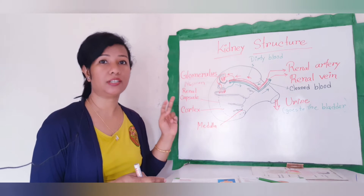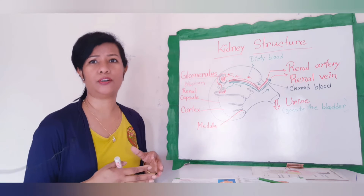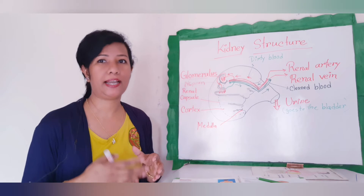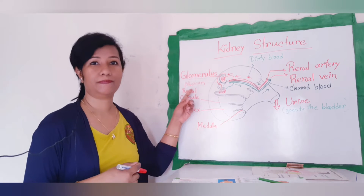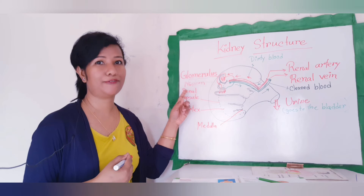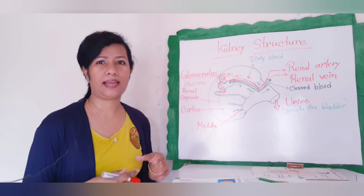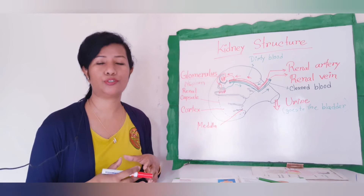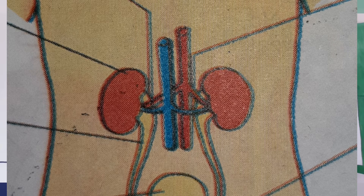The renal artery carries dirty blood to the kidney. The filtering is done by over a million tiny tubes packed into each kidney. These tubes are called nephrons. Here the blood is turned into urine. Blood enters the kidney by the renal artery.